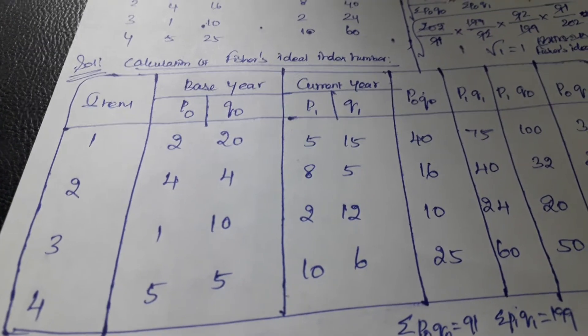Here, F denotes Fisher's Ideal Index. The formula is: square root of (summation P1Q0 divided by summation P0Q0) multiplied by (summation P1Q1 divided by summation P0Q1), all multiplied by 100. We then put the proper values already calculated in the table into the formula to get the P01 value.